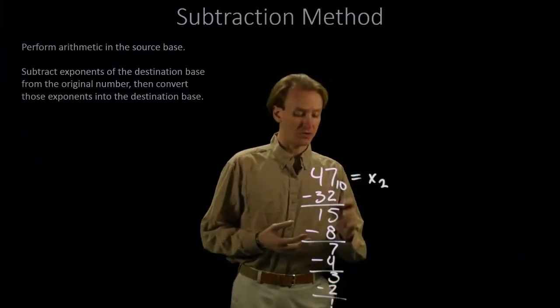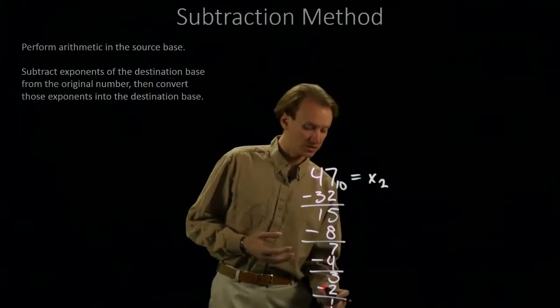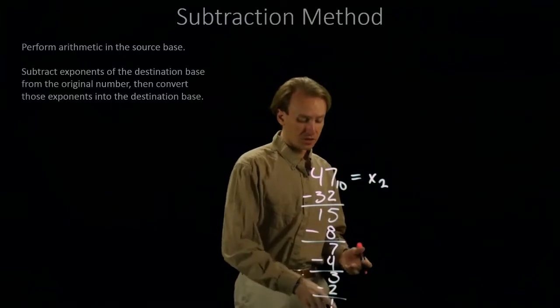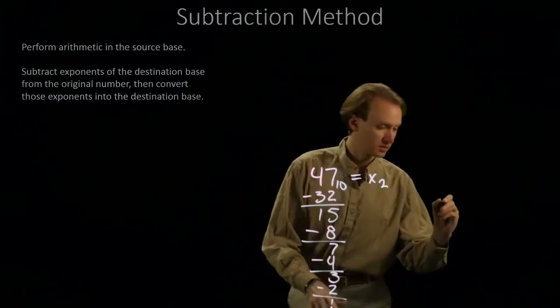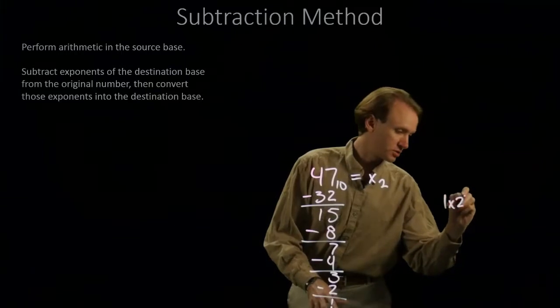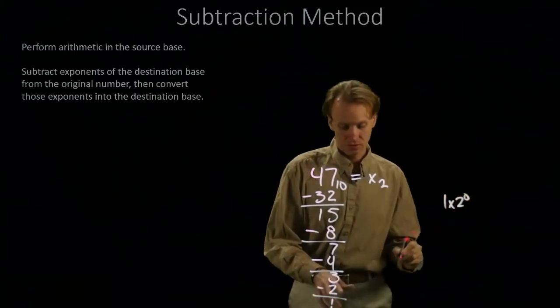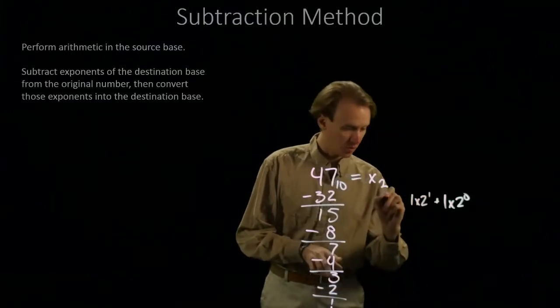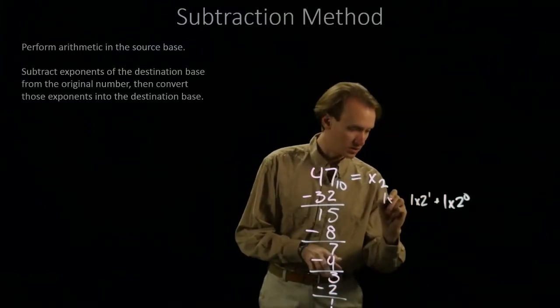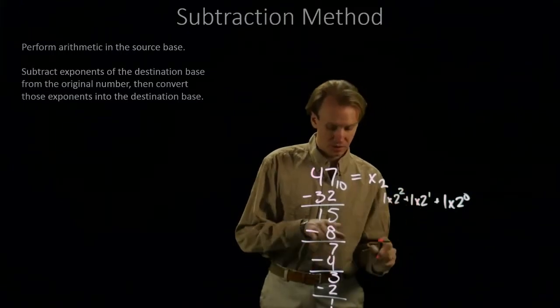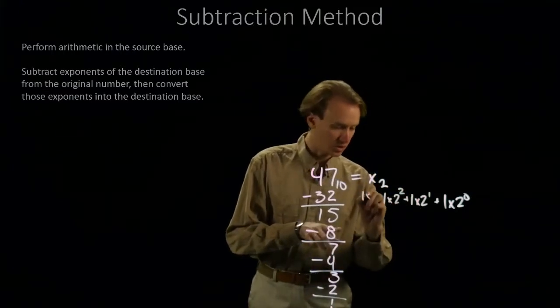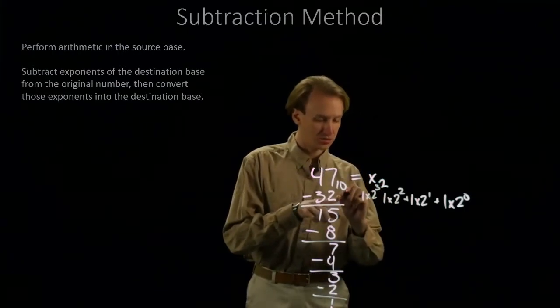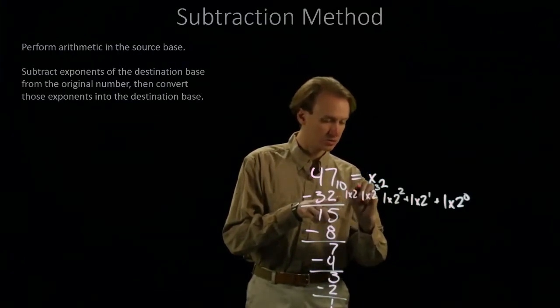Now I just need to figure out what all of these exponents are in base 2, and then I can write this number in base 2. 1 is really easy, that's 1 times 2 to the 0. 2 then is 1 times 2 to the 1st. 4 is 1 times 2 squared. 8 is 1 times 2 cubed. And then 32 is 1 times 2 to the 5th.